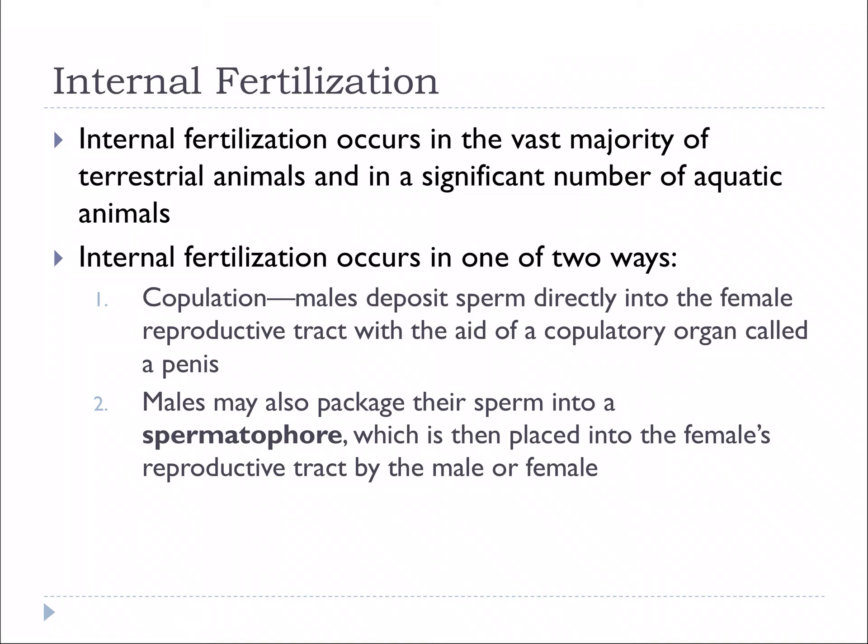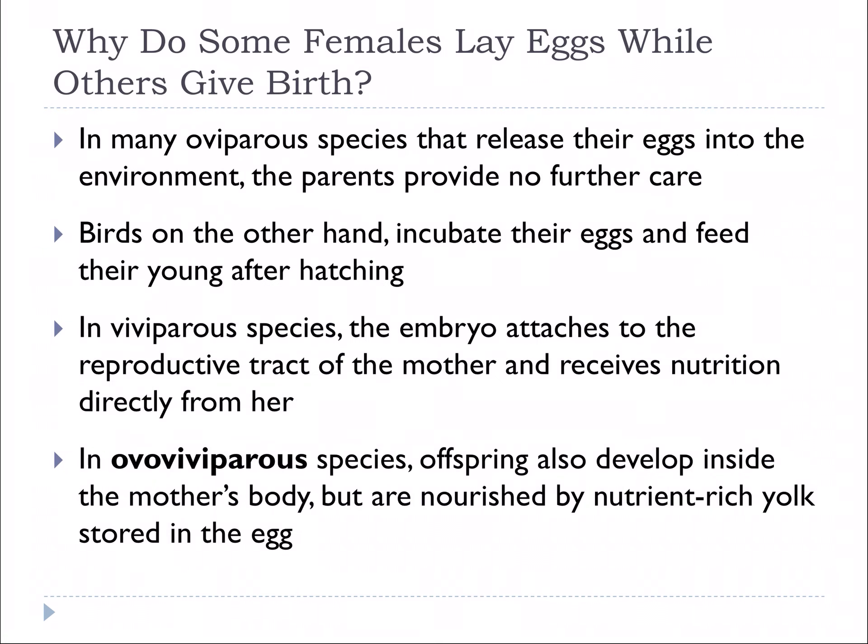There are two ways in which internal fertilization occurs. Copulation is where males deposit sperm directly into the female reproductive tract with the aid of a copulatory organ called a penis. Also, we sometimes see sperm packaged into something called a spermatophore, which is placed in the female reproductive tract by a male or a female.